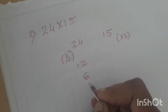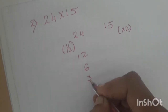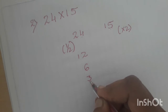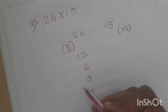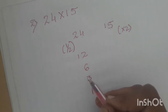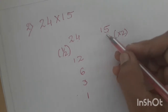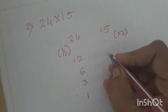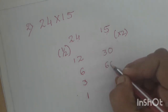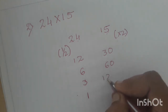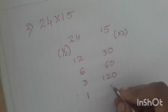Half of 6 is 3. Now 3 is an odd number, so 3 minus 1 is 2, and 2 divided by 2 is 1. Alternatively, just ignore the remainder. Now for the doubling column: 15 doubled is 30, 30 doubled is 60, 60 doubled is 120, and 120 doubled is 240.